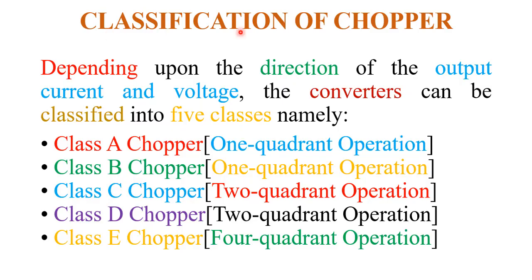First, let's discuss the classification of choppers. Depending upon the direction of output current and voltage, the converter can be classified into 5 classes: class A chopper with 1-quadrant operation, class B chopper also with 1-quadrant operation, class C chopper with 2-quadrant operation, class D chopper with 2-quadrant operation, and class E chopper with 4-quadrant operation.